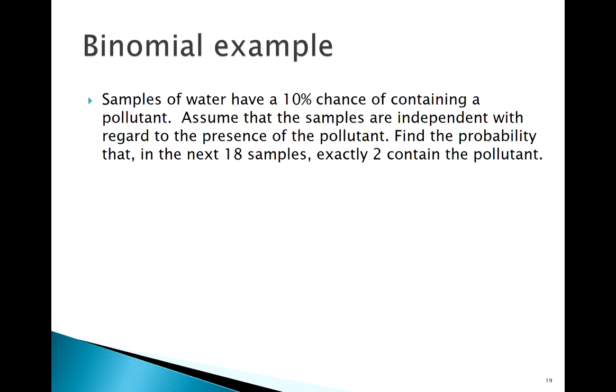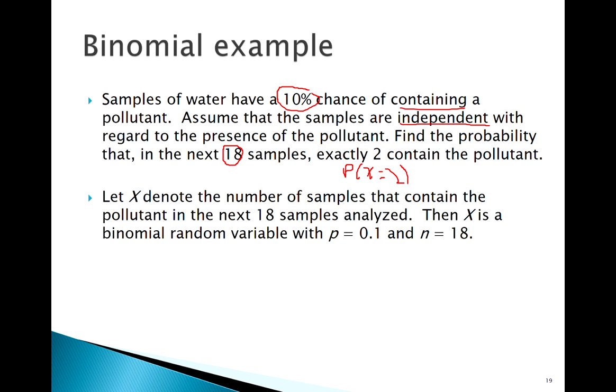Alright, so before I go into a problem, imagine we didn't know this was a binomial problem. There's those four checks that I need to be able to recognize. Okay, so I'm seeing a fixed number of trials, I can assume independence, we get a 10% chance of probability, and there's only two ways this can turn out—either it contains the pollutant or it doesn't. So we are looking for the probability of X equal to 2. We have established that this can be a binomial random variable with parameters as follows.